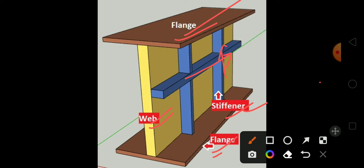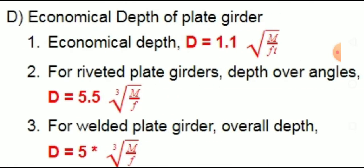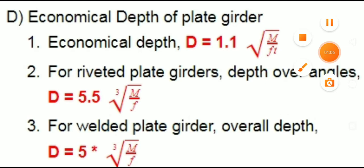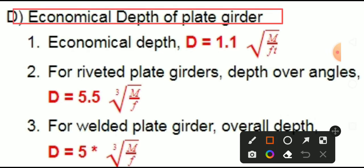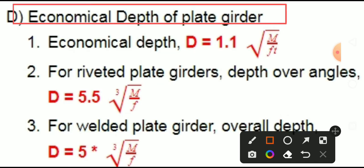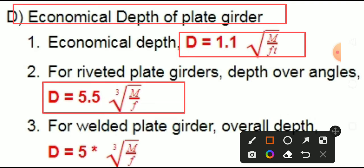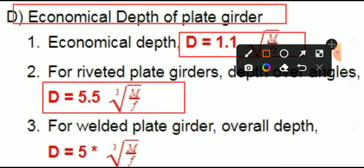Now we have to know about the economical depth of plate girder. Economical depth d is equal to 1.1 times the square root of M divided by ft. And for a rebated plate girder, depth over angle: d is equal to 5.5 times the cube root of M divided by f.